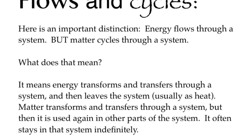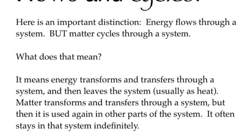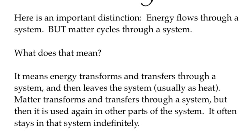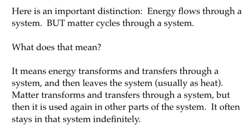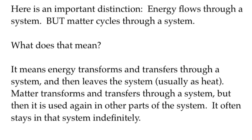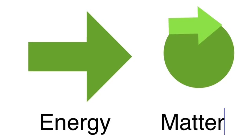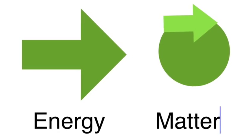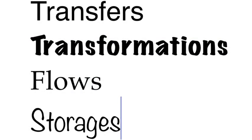When we put all this together, one thing to notice about energy and matter is that energy flows through a system — it starts at one end and exits at the other end, usually as heat. But matter will go through the system and be reused — it'll be recycled and come back around into the system. So energy flows, matter cycles.